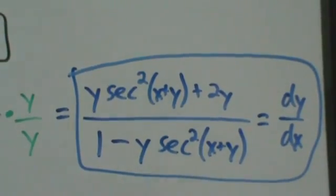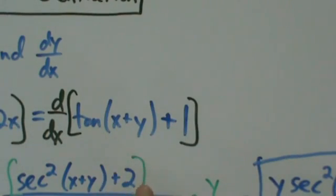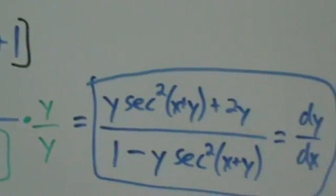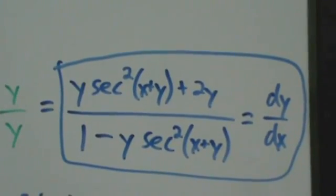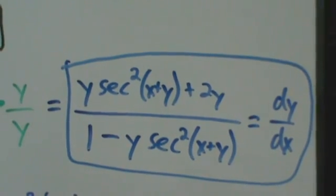So that's dy/dx. A little more complicated because from the beginning we had tangent of x plus y, which gave us more work — distributing the secant squared and so on. But the idea was pretty much the same. The key trick is to remember that implicit differentiation is really just the chain rule. That's all it is.